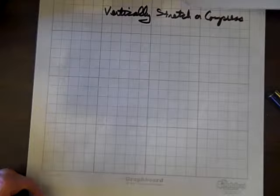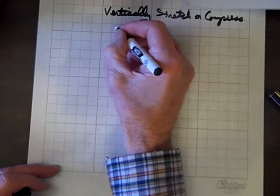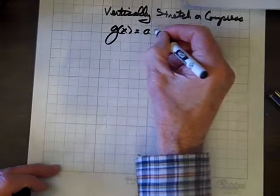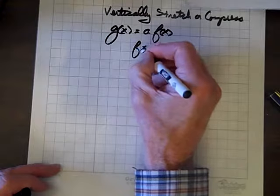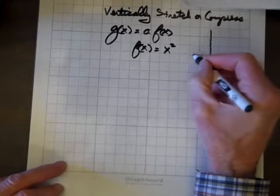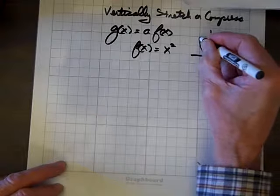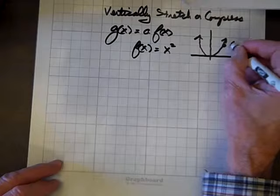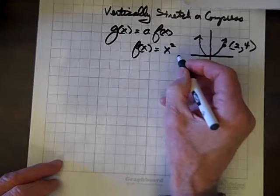Finally, let's talk about vertically stretching or compressing a function. So the form we're looking at is g of x equals a times f of x. And so if f of x equals x squared, we know the graph of this is a parabola, vertex at the origin. And a point on this graph, if x is 2, y will be 4, f of 2 is 4.